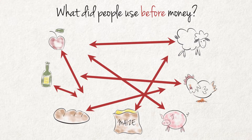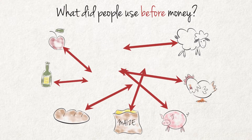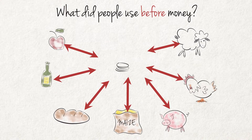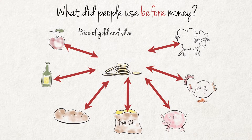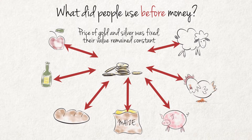The person parting with the sheep may want chickens in exchange rather than maize. The use of precious metal coins replaced barter trade. Gold and silver coins were minted and used in trade, with each coin trading according to its value in gold or silver. At the time, the price of gold and silver was fixed, and the value of the coins therefore remained constant.